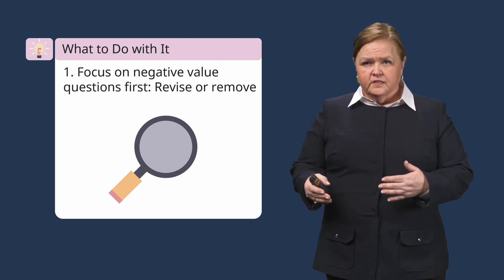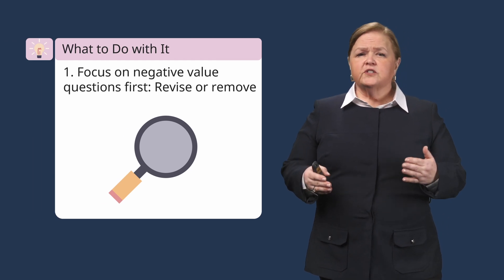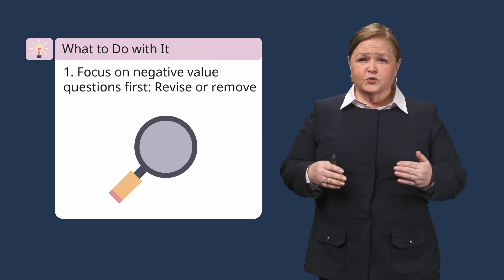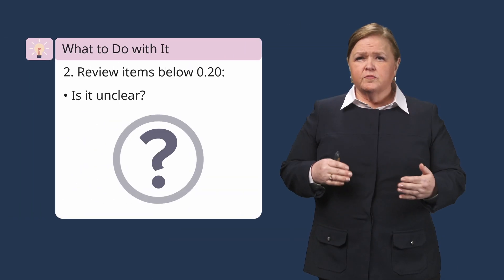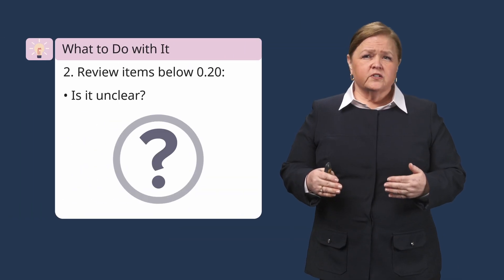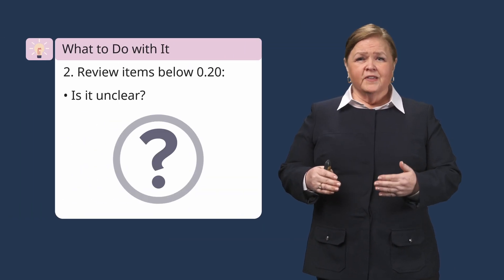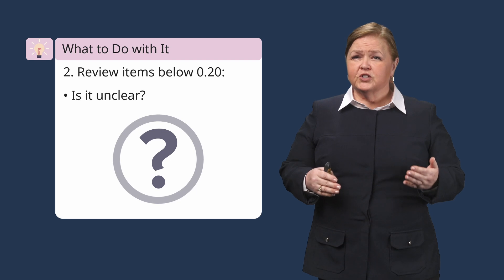So, what do you do with all this information? When you review your exam statistics, focus first on the questions with negative values — we're going to start from the bottom up. These are the ones that likely need immediate revision or removal. Next, move on to the questions that are below 0.20, and ask yourself these three questions.